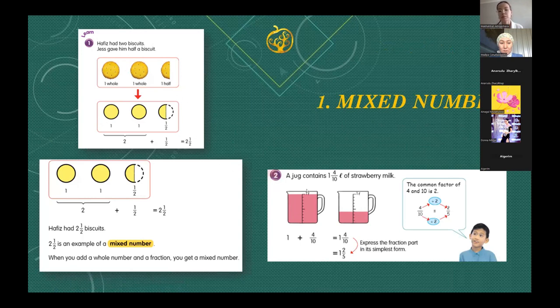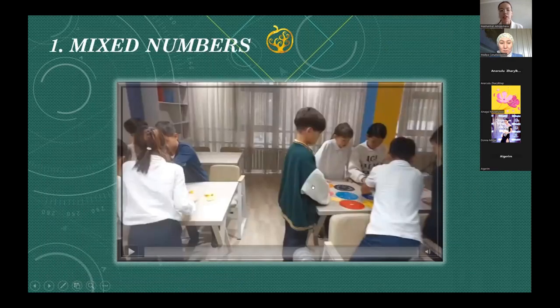Also, this example we can make with the jug contains. For example, in there, with that container, we can make examples for liters, for example. Also, we use it in our practice. Also in this, for example, one and four tenths, with division we can make it in the easy way. So, we learn about mixed numbers.